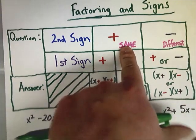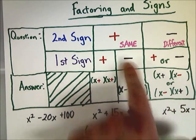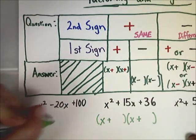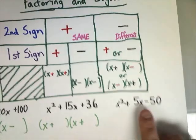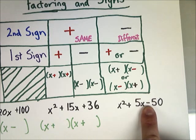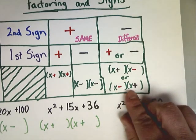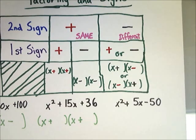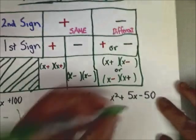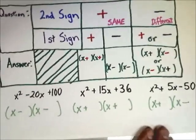Let's look at the first one that I'd written down. In this one, the second sign is plus, so that means the answers are the same. Then I have to go to that first sign, and it is minus. So that means both my signs are going to be minus. So x minus something or other, x minus something or other again. And for this one, if the second sign is negative or a minus, I know that the signs are going to be different.